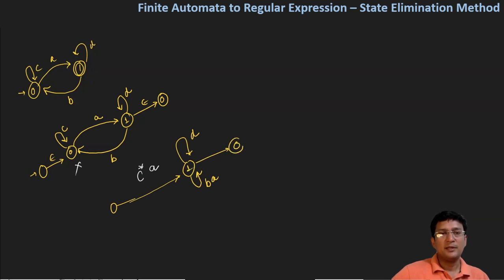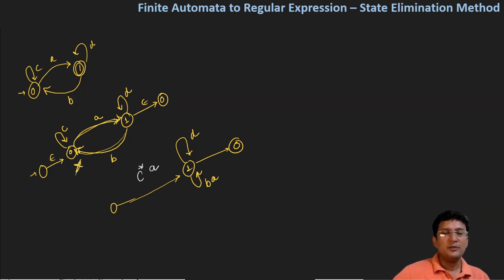Let me explain again how this was formed. If you want to eliminate state number 0, then via epsilon and 'a' you can reach state number 1 — but there is a cycle at state 0 which is of 'c', so you can say this is c*a to go to state 1. Then the original automata says that from state 1 you can come back to 0 and again go to 1 with symbol 'ba', and this can happen many times. So this means there is a cycle of ba, which we apply at state number 1.